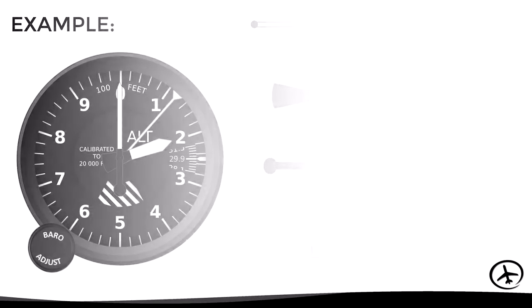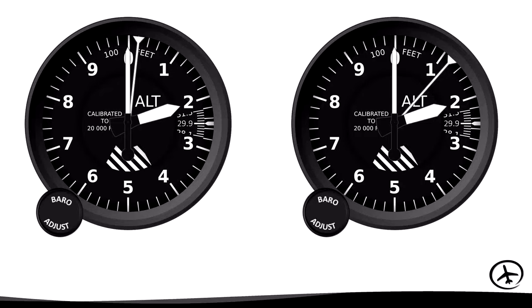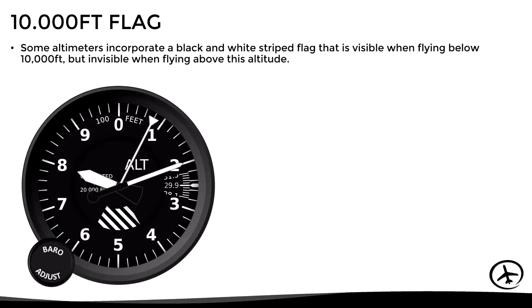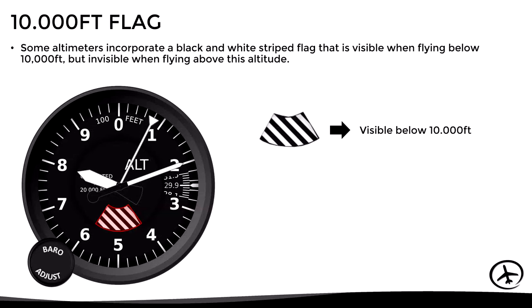The three-needle system presents a potential problem: if two altimeters show the same position of the short and long needles, one may indicate 2,000 feet while the other indicates 12,000 feet. The only way to notice the difference is by checking the triangular needle, which can be difficult to see under high workload. For this reason, most altimeters incorporate a 10,000-foot flag with black and white stripes, which is visible below 10,000 feet but disappears above that altitude.